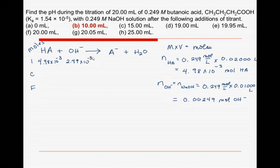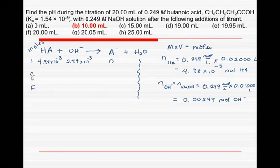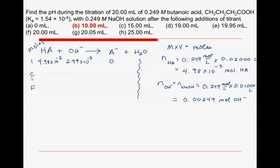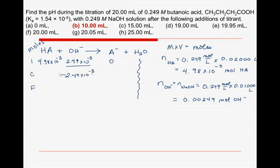Now, before this reaction has taken place, there is no A minus, and we don't care about water. There's lots of water. We will consume this reaction. The way you work an ICF table is to use it up, or continue the reaction until the smallest reactant, the smallest amount of reactant is consumed. So we see here that there's less sodium hydroxide. So I'm going to use up all of that sodium hydroxide, and I'm going to carry that across each line, negative 2.49 times 10 to the minus 3 here, and positive 2.49 times 10 to the minus 3 here.